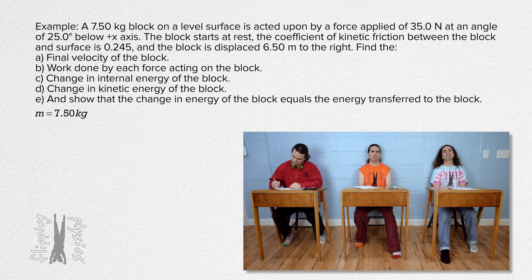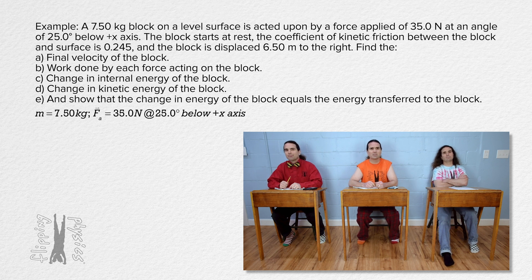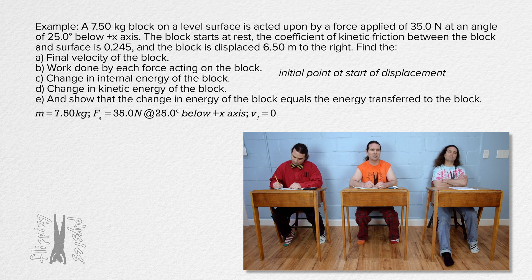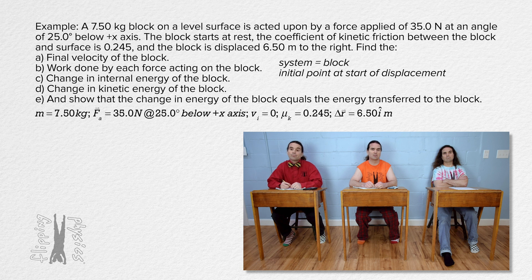Mass equals 7.50 kilograms. Force applied equals 35.0 Newtons at an angle of 25.0 degrees below the positive x-axis. Velocity initial equals zero and the initial point is right at the beginning of the displacement. The coefficient of kinetic friction equals 0.245 and displacement equals 6.50 meters. We should identify that the system is the block, and the displacement in terms of unit vectors equals 6.50 meters in the i-direction.